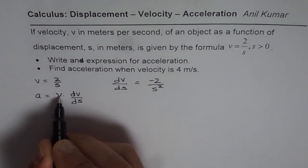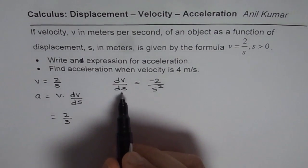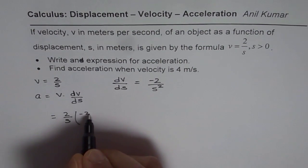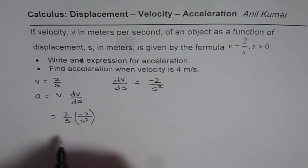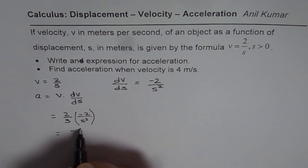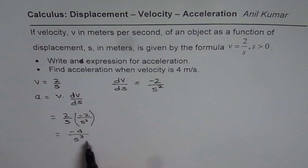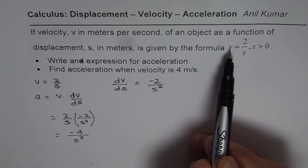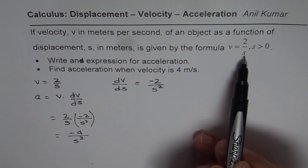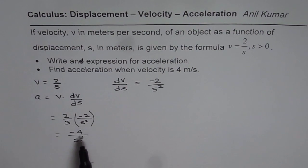Acceleration will be v, which is 2 over s, multiplied by dv/ds, which is minus 2 over s squared. So we get an expression for acceleration in terms of displacement as minus 4 over s cubed. What you also learn here is that if velocity is inversely proportional to s, then acceleration is inversely proportional to s cubed. That is an interesting thing to understand.